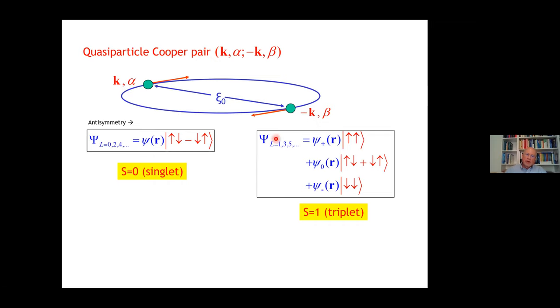We can view a Cooper pair as two quasi-particles moving around each other with k and minus k, separated on average by the coherence length. Because of the anti-symmetry of the pair wave function, there are two possibilities. Either the relative orbital angular momentum is even, then the spin part must be a singlet with s equal to zero. Or if the relative angular momentum is odd, then the spin part is a triplet, s equal to one.